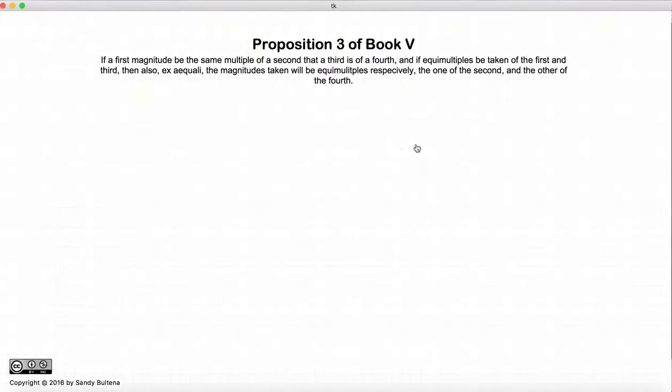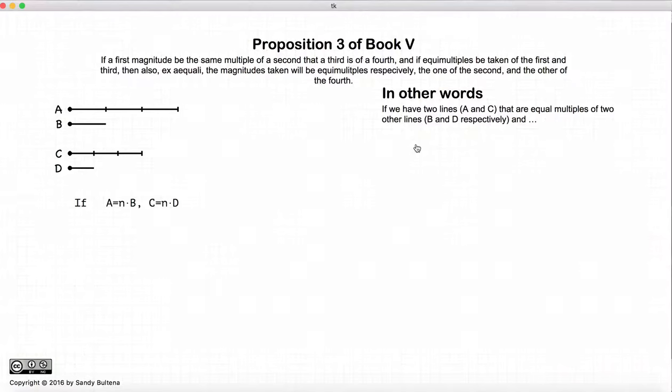This video presentation is going to be on Proposition 3 of Book 5. And what this proposition states is, let's start with four lines, A, B, C, and D. A and C are equal multiples of B and D.